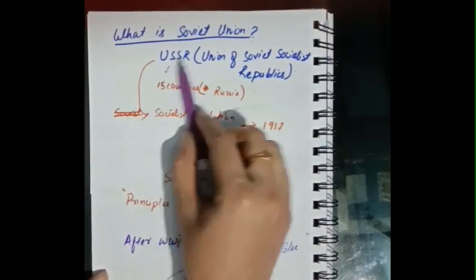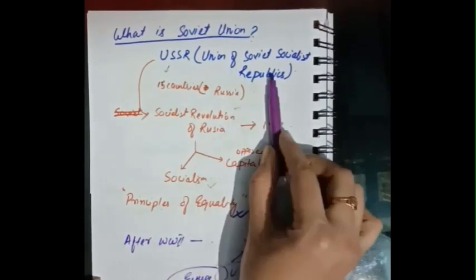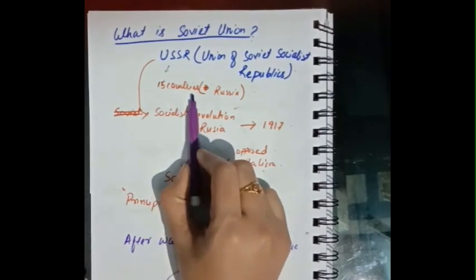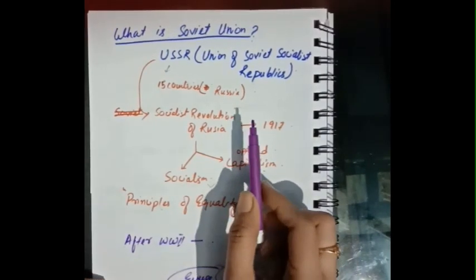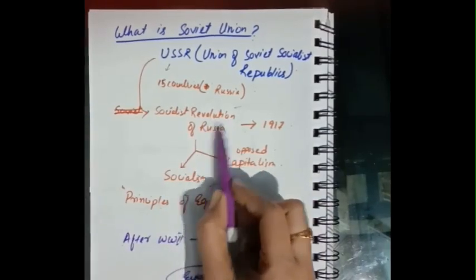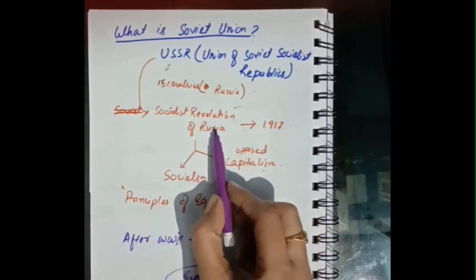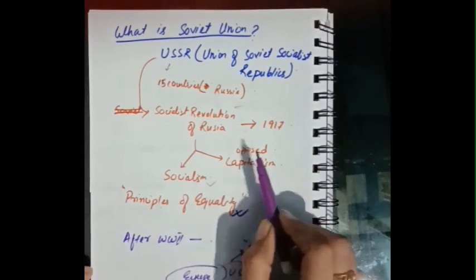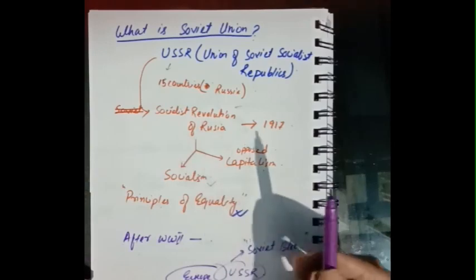First, let us discuss what is the Soviet Union or USSR — that is, the Union of Soviet Socialist Republics. The USSR consists of 15 countries including Russia. It came into existence after the socialist revolution of Russia in 1917, which was inspired by the idea of socialism and opposed capitalism.